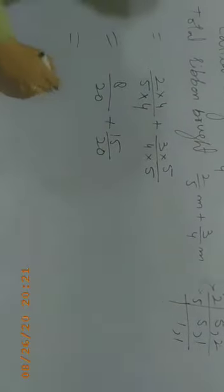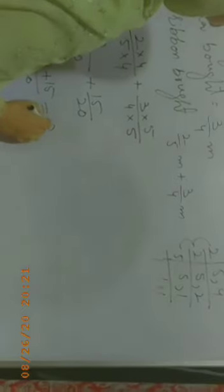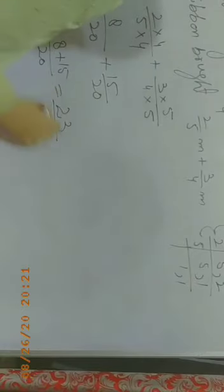Two fours are eight divided by twenty plus three fives are fifteen divided by twenty. So now the denominator is the same. Twenty plus eight plus fifteen. Fifteen plus eight is twenty-three by twenty.